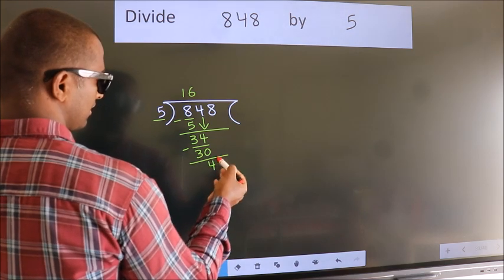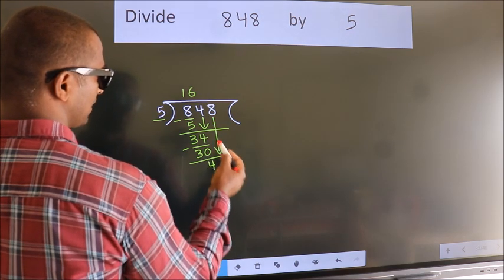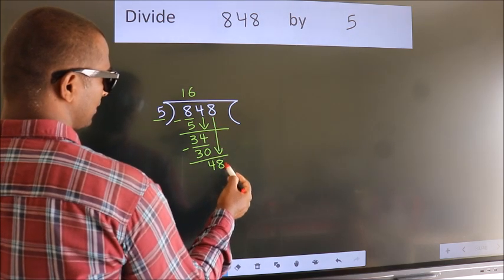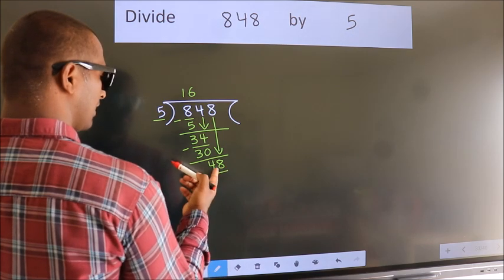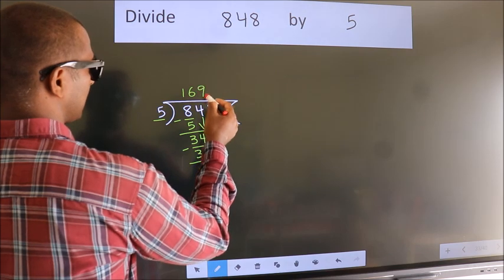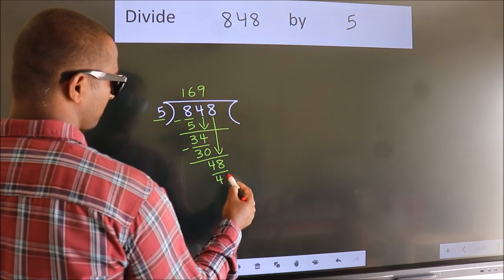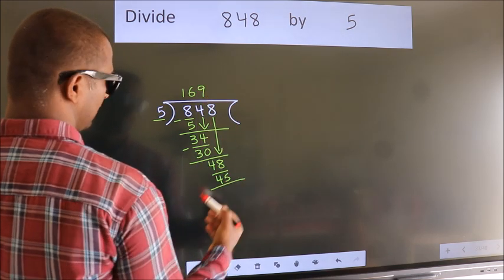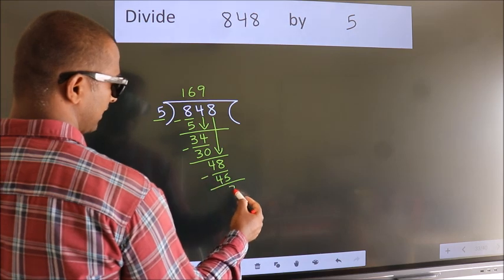After this, bring down the beside number. So, 8 down. So, 48. A number close to 48 in 5 table is 5 9s 45. Now, we subtract. We get 3.